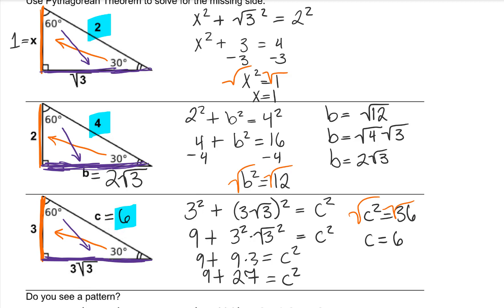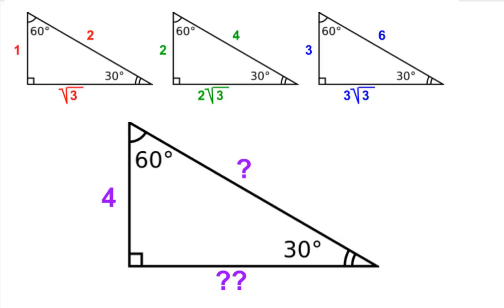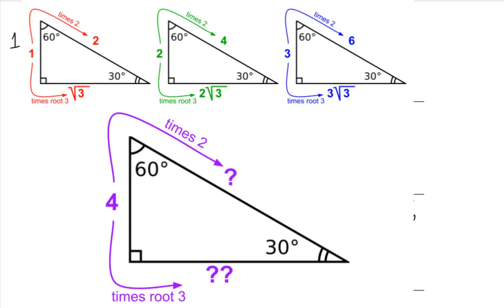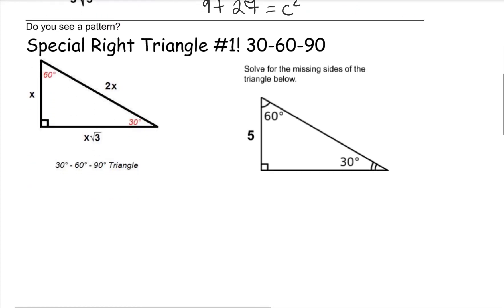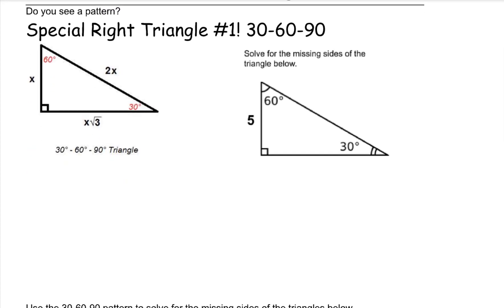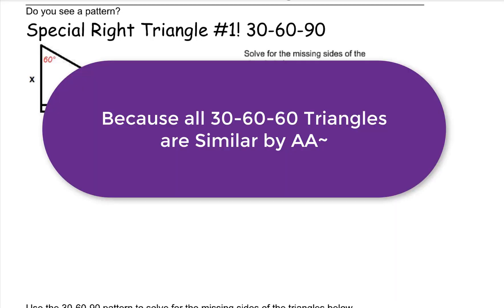Do you have a guess of what the side across from the 60 degree angle and the hypotenuse would measure if this side were 4? We have a pattern. This is called a special right triangle — it's 1 of 2 that we're going to learn about. A 30-60-90 special right triangle has the same proportions of its sides as all other 30-60-90 triangles.